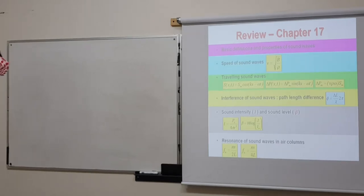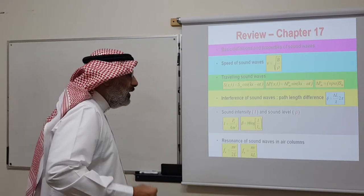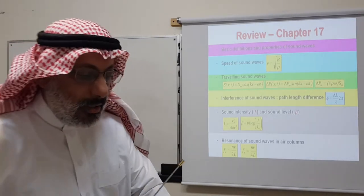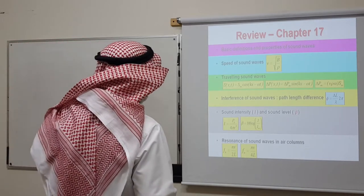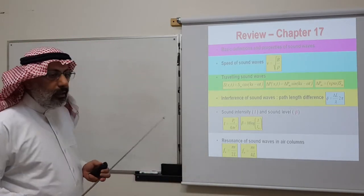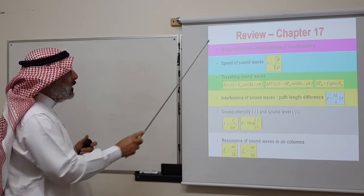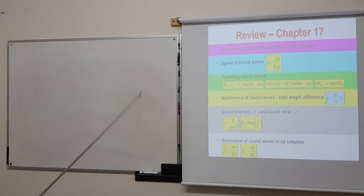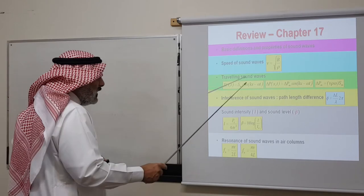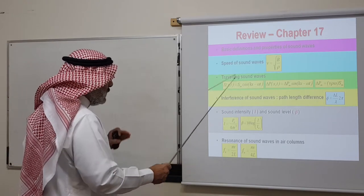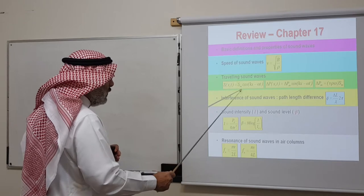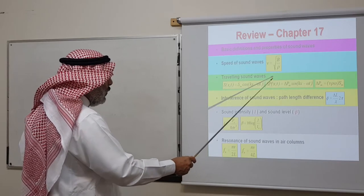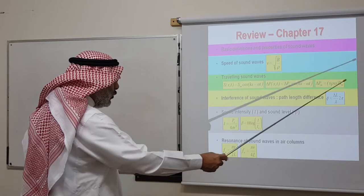Today we continue with chapter 17, our third and last lecture in this chapter. In the last two lectures, we started with basic definitions and properties of sound waves. We saw that the speed of sound depends on the bulk modulus and the density of the medium. A sound wave is accompanied by two waves: the displacement wave showing how molecules are displaced, and the pressure wave showing variation of pressure due to propagation.